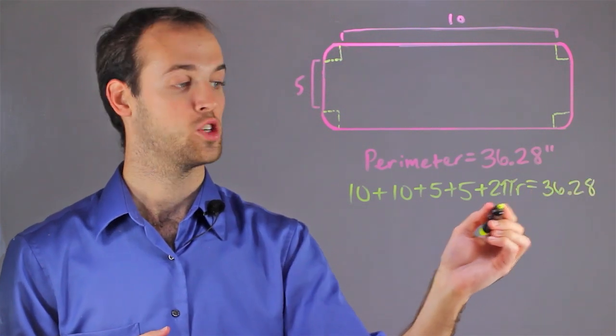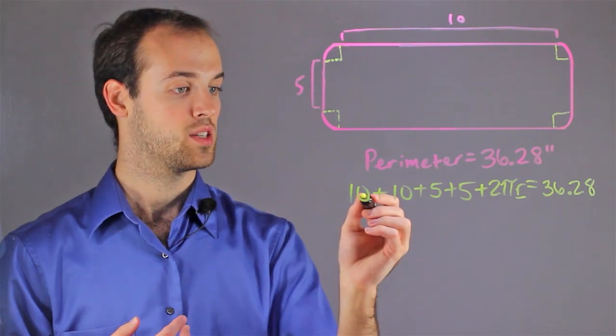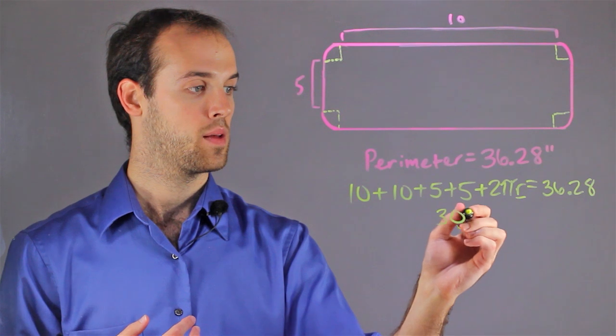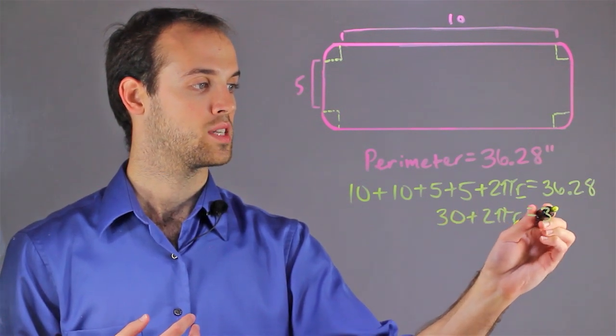And from here, all I'm going to have to do is solve for r, which is going to be my corner radius. So I'm just going to combine these numbers: 10 plus 10 plus 5 plus 5 is 30, plus 2 pi r is equal to 36.28.